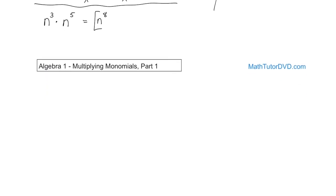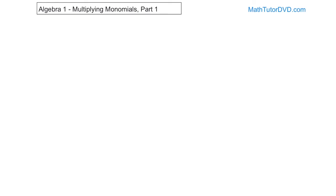Let's do a couple quick examples. If you have x to the power of 3 times x to the power of 4 times x squared, the same thing works when you're multiplying more than two things together. This is x cubed times x to the 4th times x squared — it's the same base — so all you need to do is add those exponents together. 3 plus 4 plus 2 is 9, so it's x to the 9th. You just add everything together.